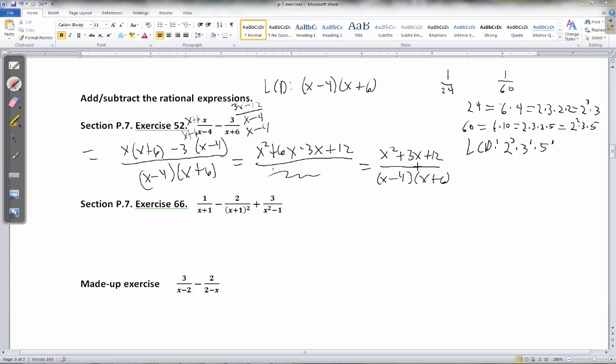I don't think this will factor. Only factoring pairs of 12 are 2 and 6, 1 and 12, and 3 and 4, and none of them add to be 3. The reason I'm checking is because I want to make sure the fraction doesn't reduce at the end. Because if this had factored and I would have had an x minus 4 or an x plus 6, I still would have had to reduce. But it didn't reduce, so this is my final answer. You could work out the bottom as well, but there's no special need to.